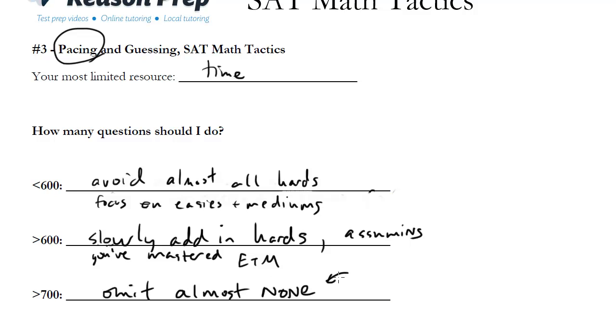So you really have to be very careful with the omits. You really only can omit, if you're going for 800, you can't omit any. If you're going for just a 700 plus, maybe one or two. But then you better be pretty accurate with the questions you do do.